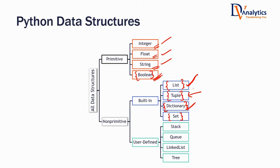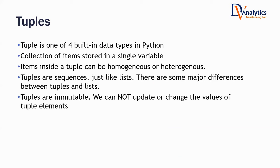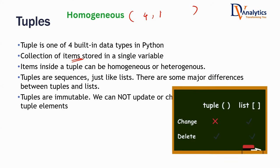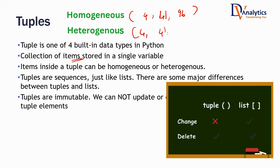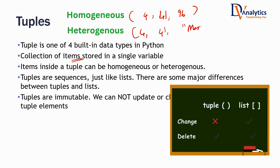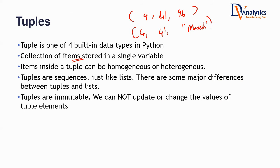Let us understand what is a tuple data type. Tuple looks like a list, but it is not exactly a list. Tuple is also a collection of items stored in a single variable. Tuple also includes homogeneous and heterogeneous elements. Homogeneous means if I have numbers 4, 41, 96 — these are all homogeneous. Heterogeneous means 4, 41, and then there is a string called March. So you can have a tuple like this.